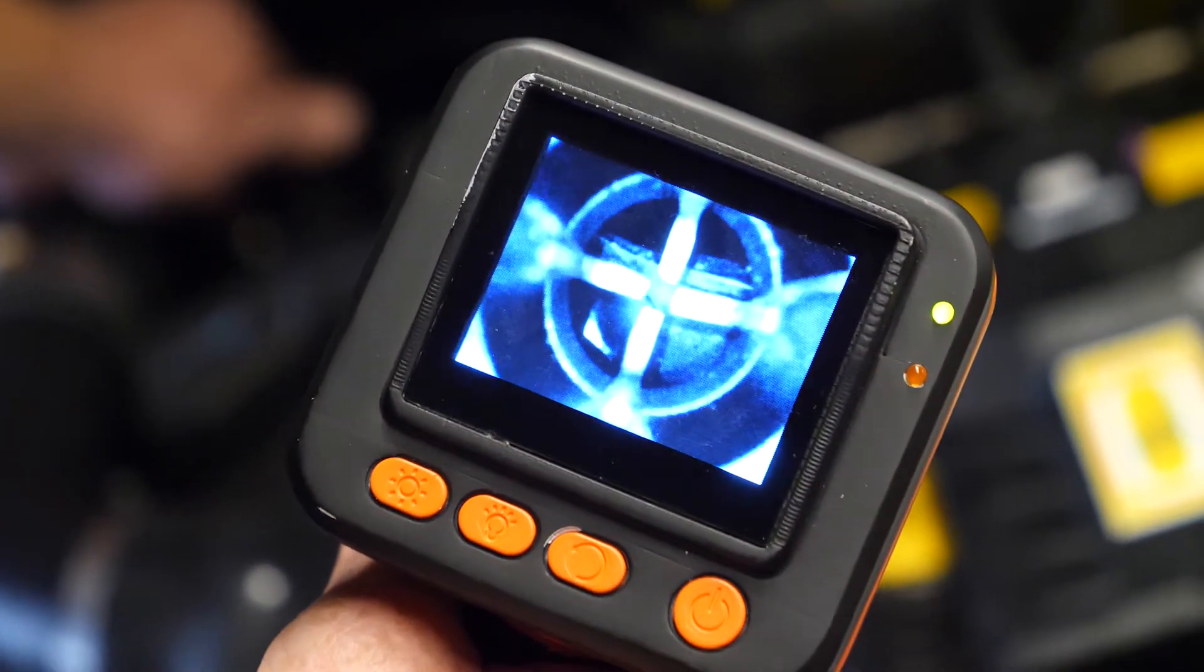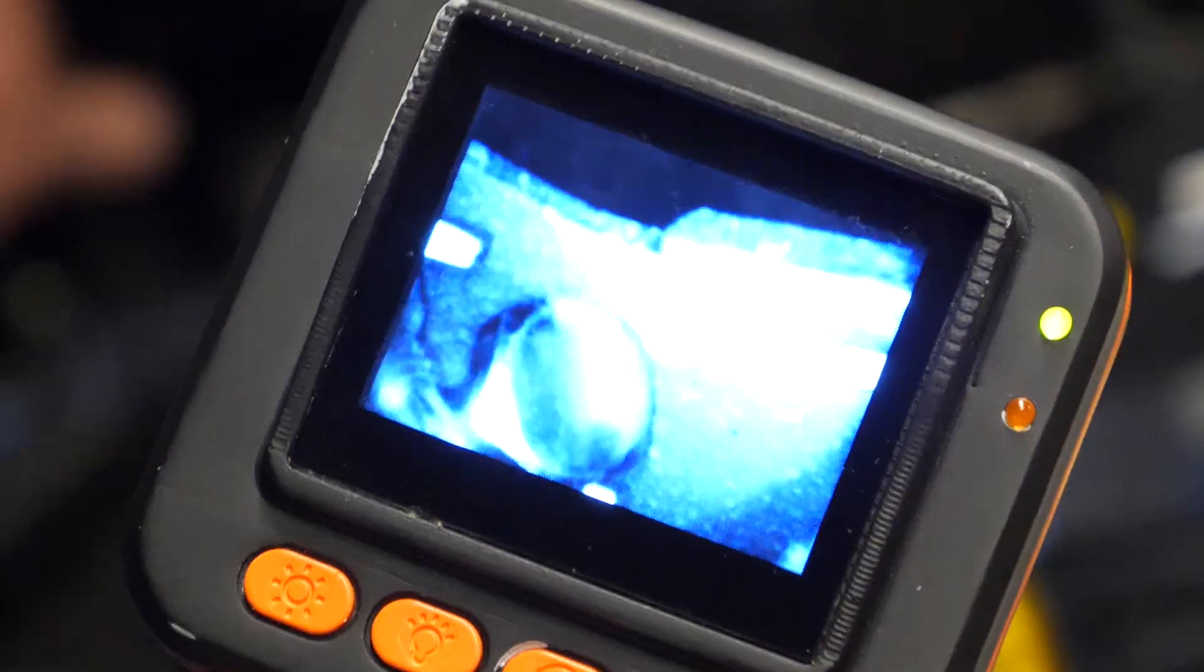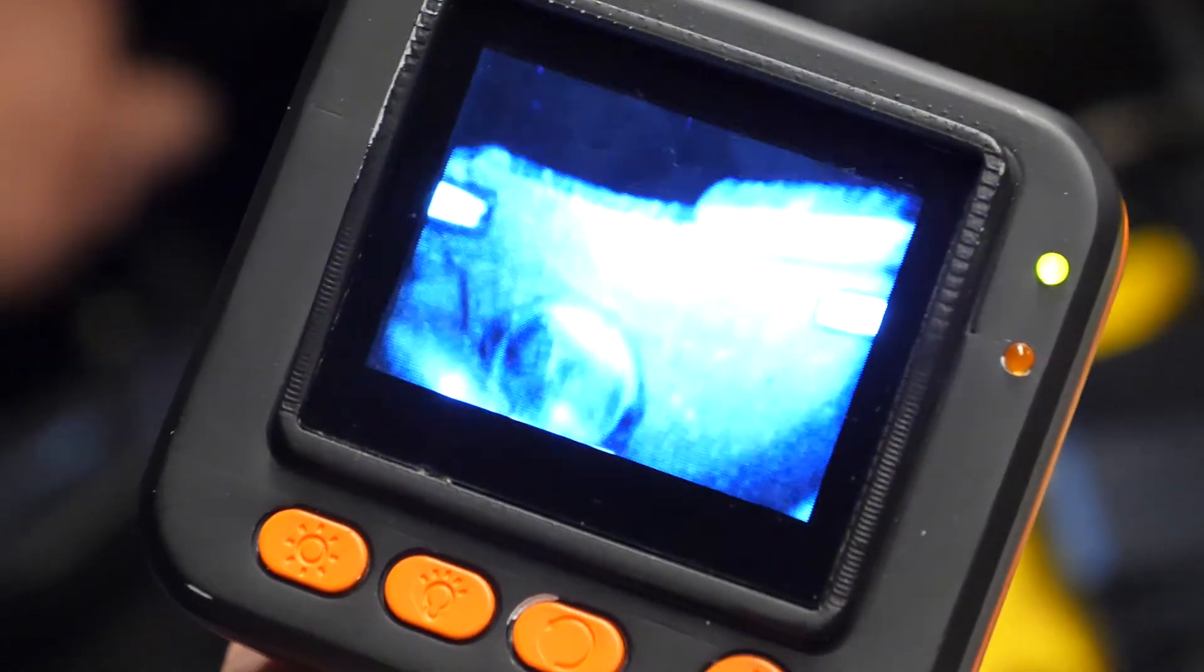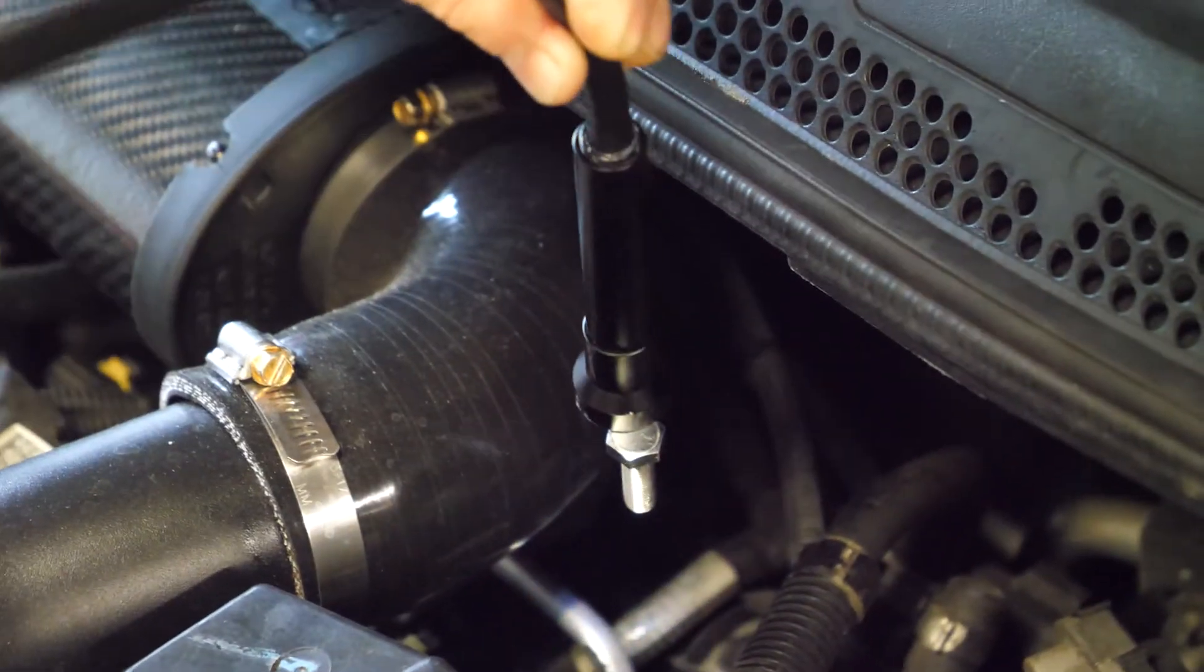Easily search for dropped components, look for leaks, and guide the inspection tip into difficult to see areas. Magnetic components are quickly picked up by the tip, and non-magnetic or wedged components can be grabbed with the four-jaw pickup tool.